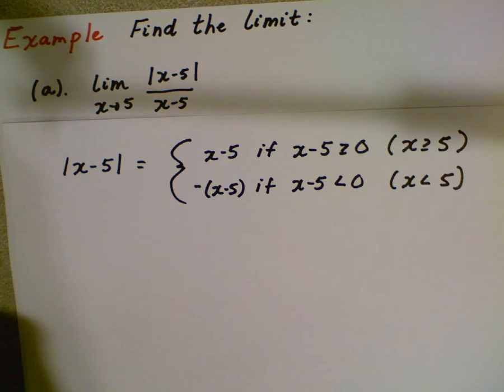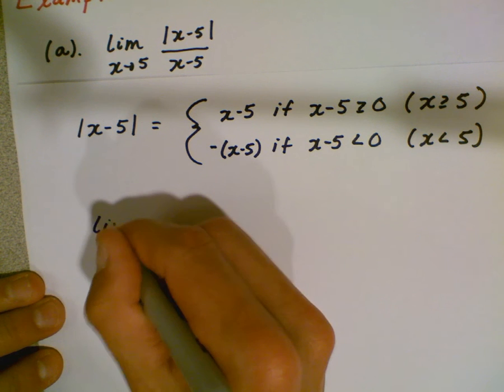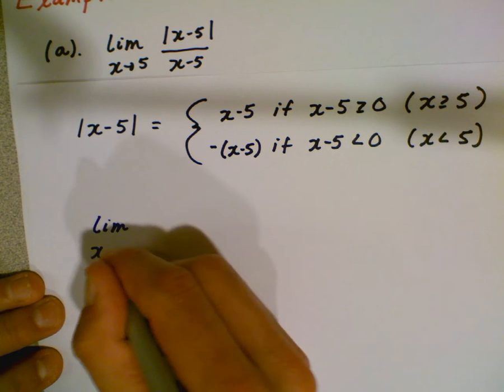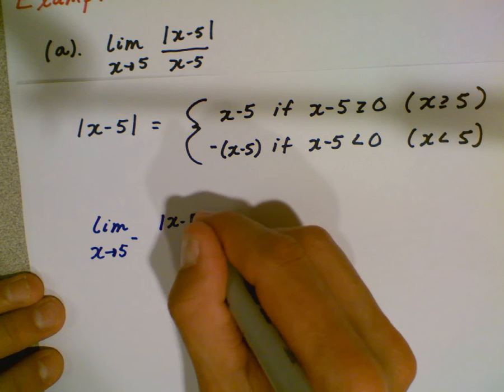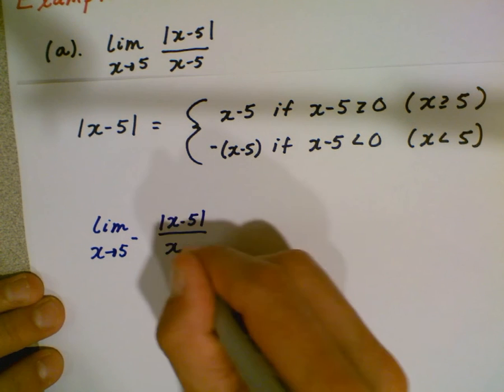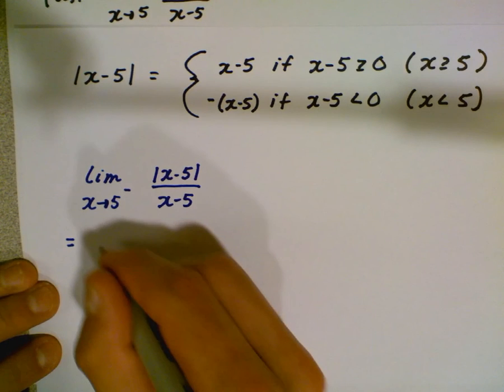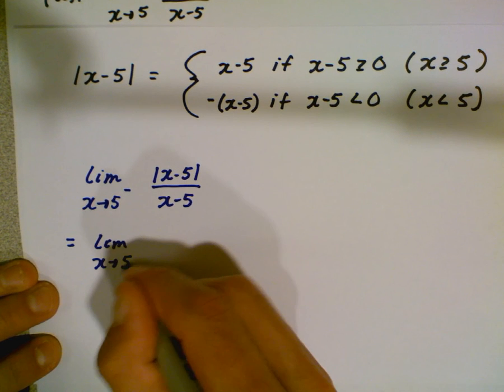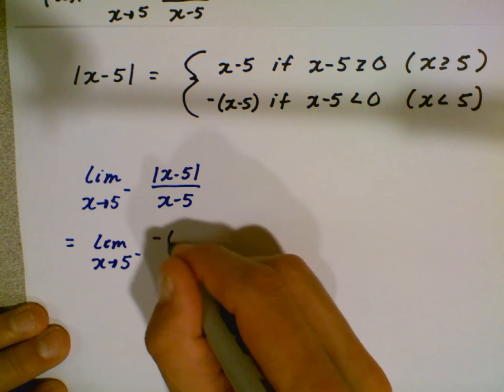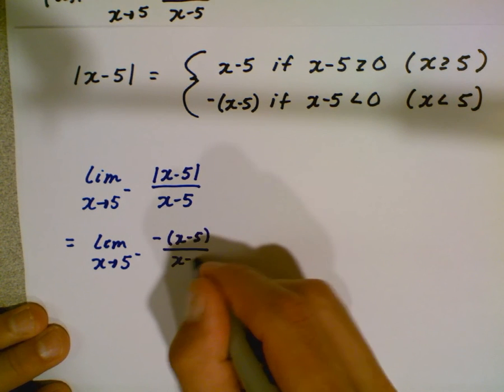So what actually happens here is we need to rewrite our limits and we've got to consider two limits here. You're going to consider the left-hand limit, the limit as x is approaching 5 from the left, that's what that minus sign means of our original function there. And that actually equals the limit as x approaches 5 from the left of the opposite of x minus 5 over x minus 5.